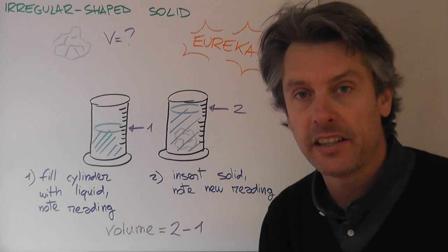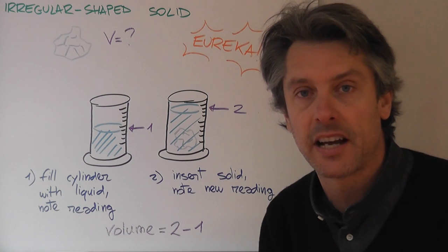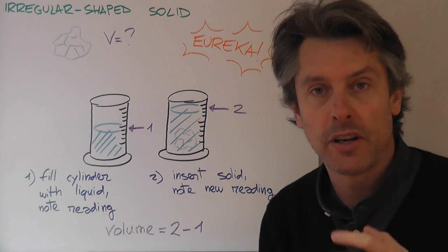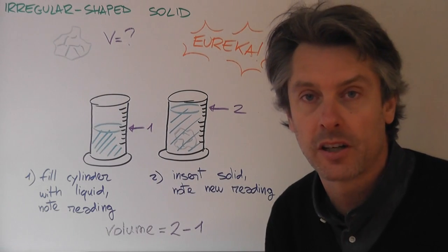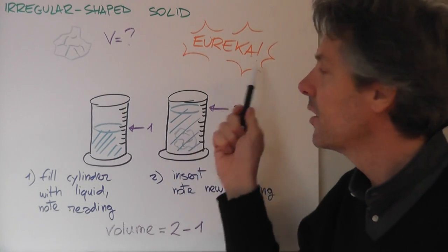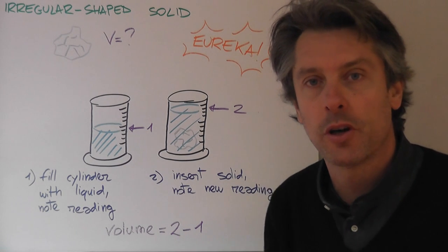But luckily, we can use an idea that firstly came out from the Greek scientist, Archimedes, when he solved a problem which is very similar to finding the volume of a lump of rock. And this is why he said in Greek, Eureka, which means, I found it. And how are we going to do it?